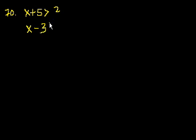We're on problem 70. If x plus 5 is greater than 2, and x minus 3 is less than 7, the value of x must be between which of the following pairs of numbers?